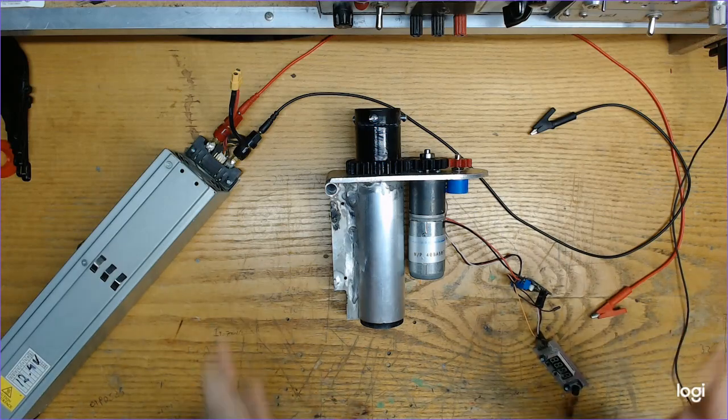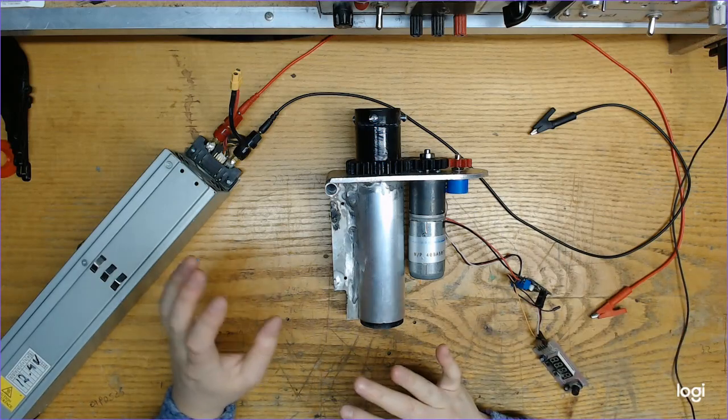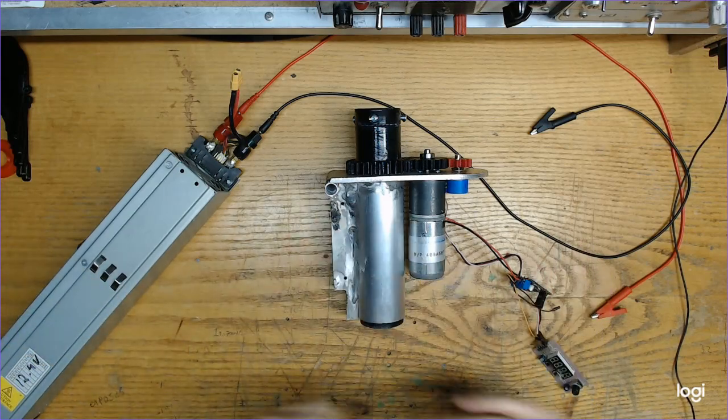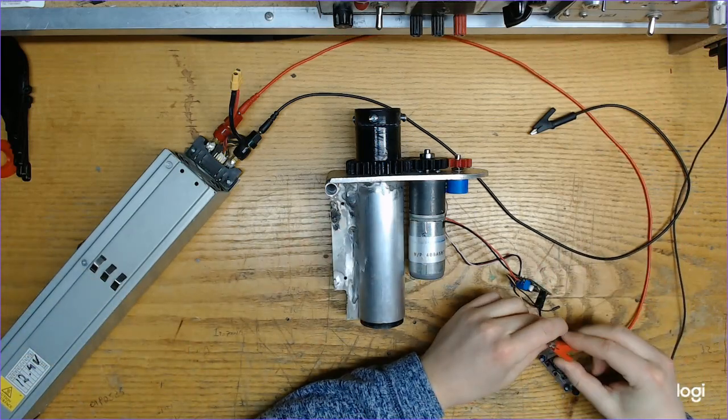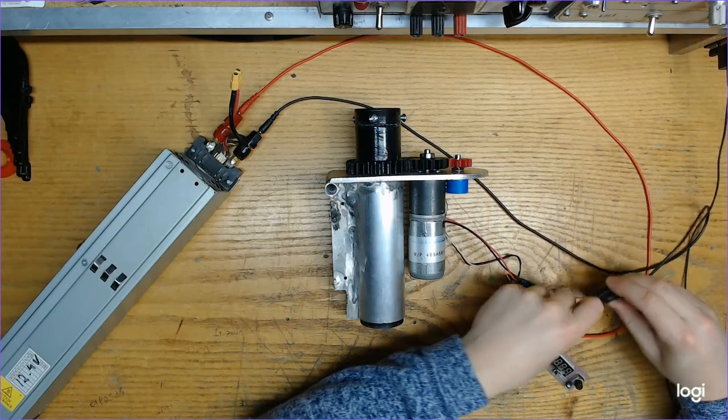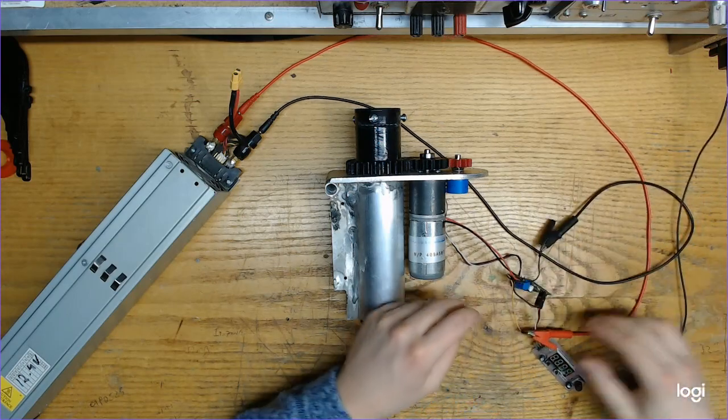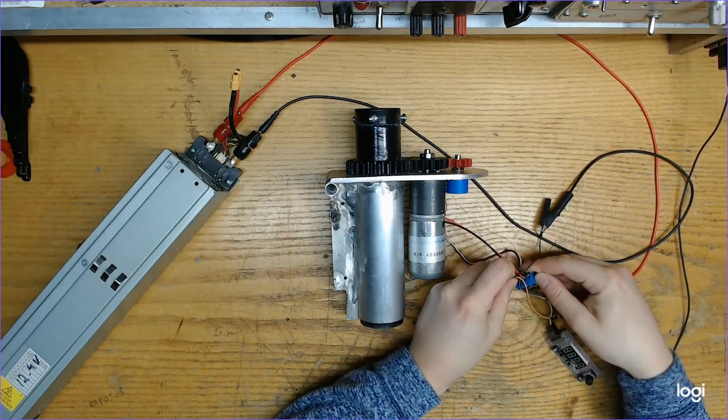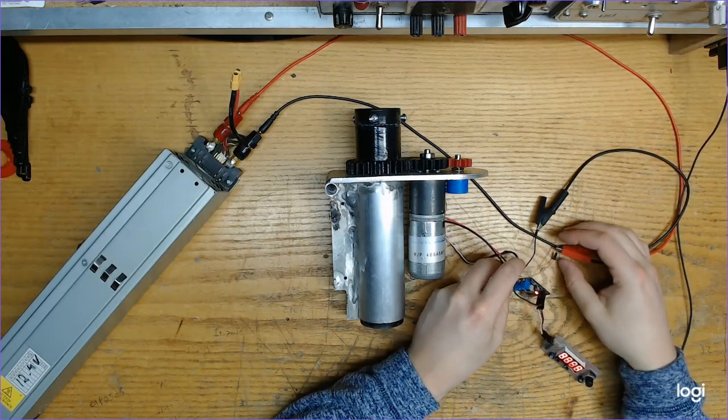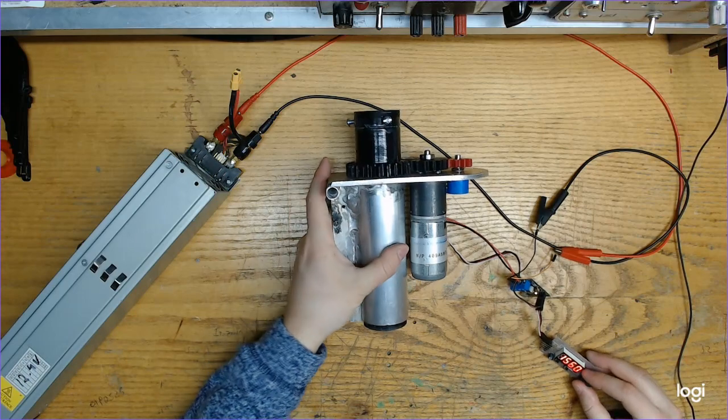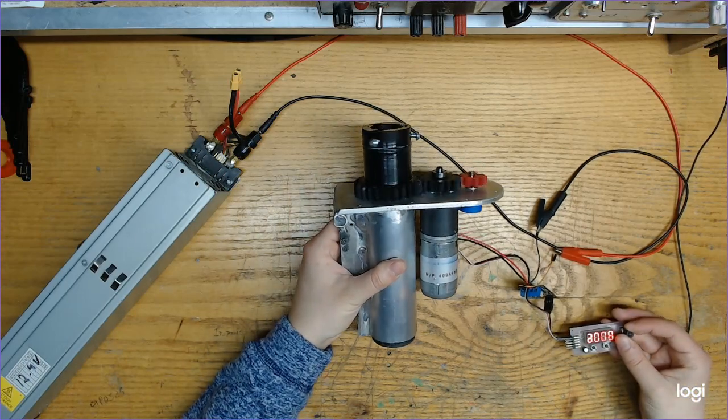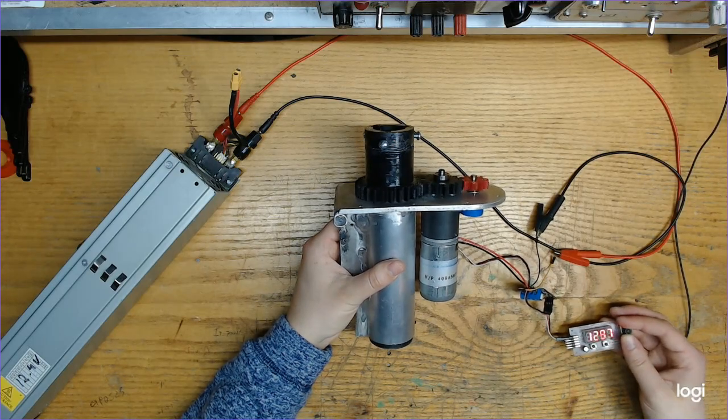So what this does is, basically the trolling motor goes through there and then when this is connected to power, there we go, we can use a servo input to rotate this.